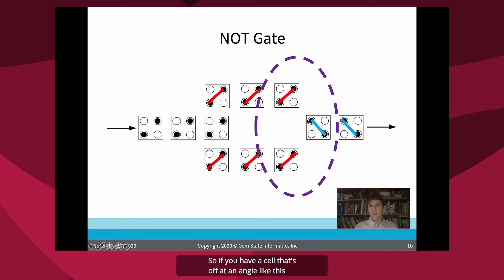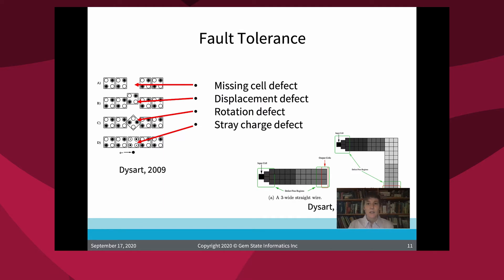So if you have a cell that's off at an angle like this, this electron here repels it away from this dot here. And similarly, there's no electron here. So this dot is comfortable or this electron is comfortable being right there. So you end up with the opposite configuration than the input. And that gets carried on to the output.